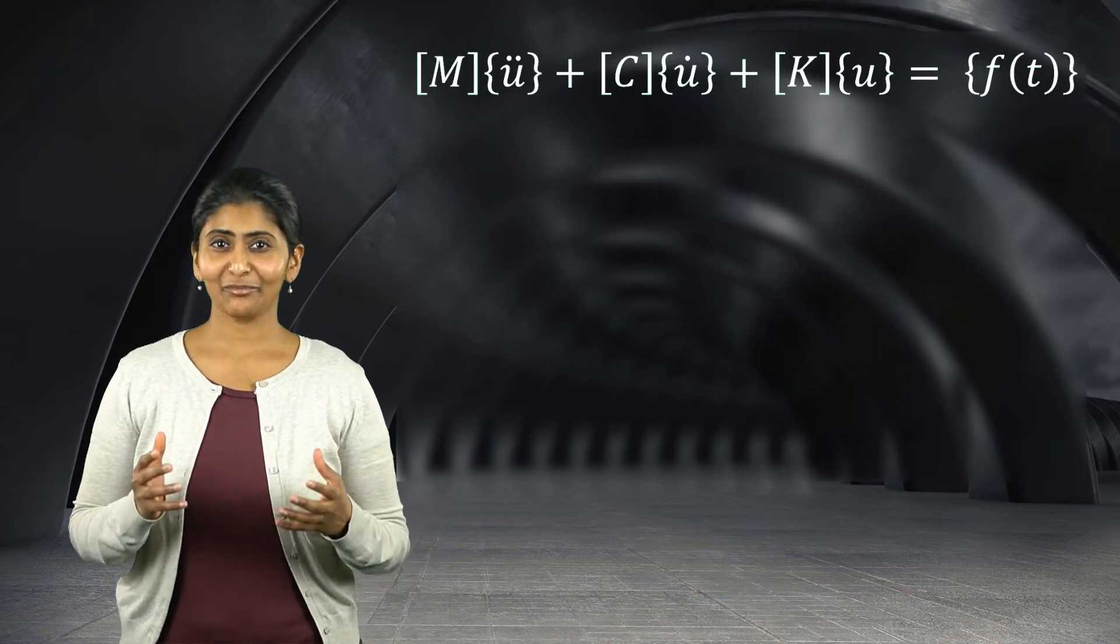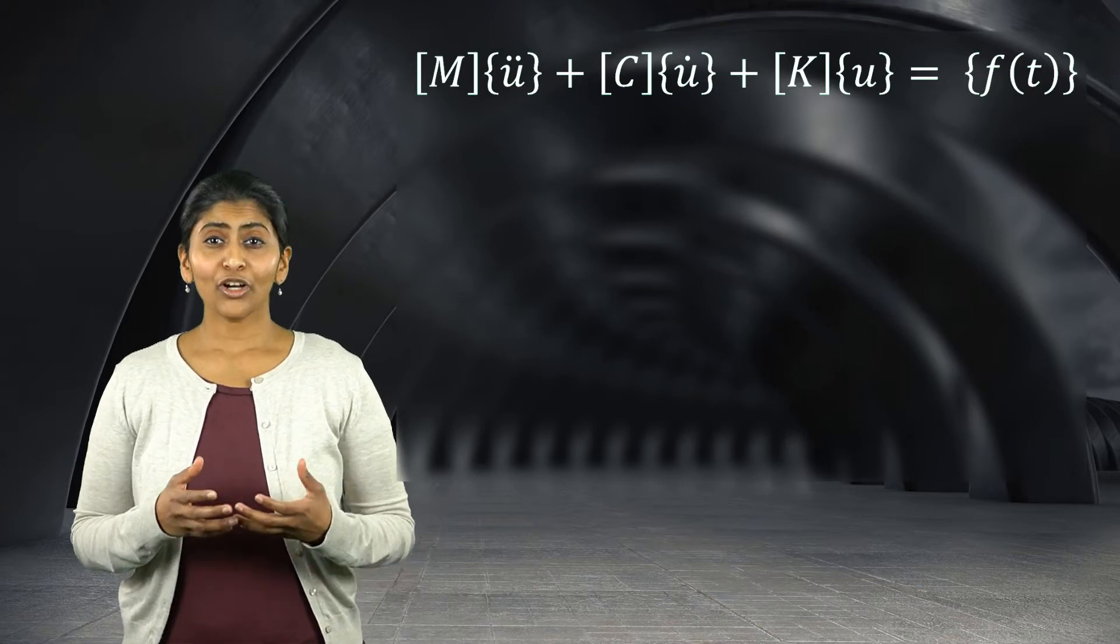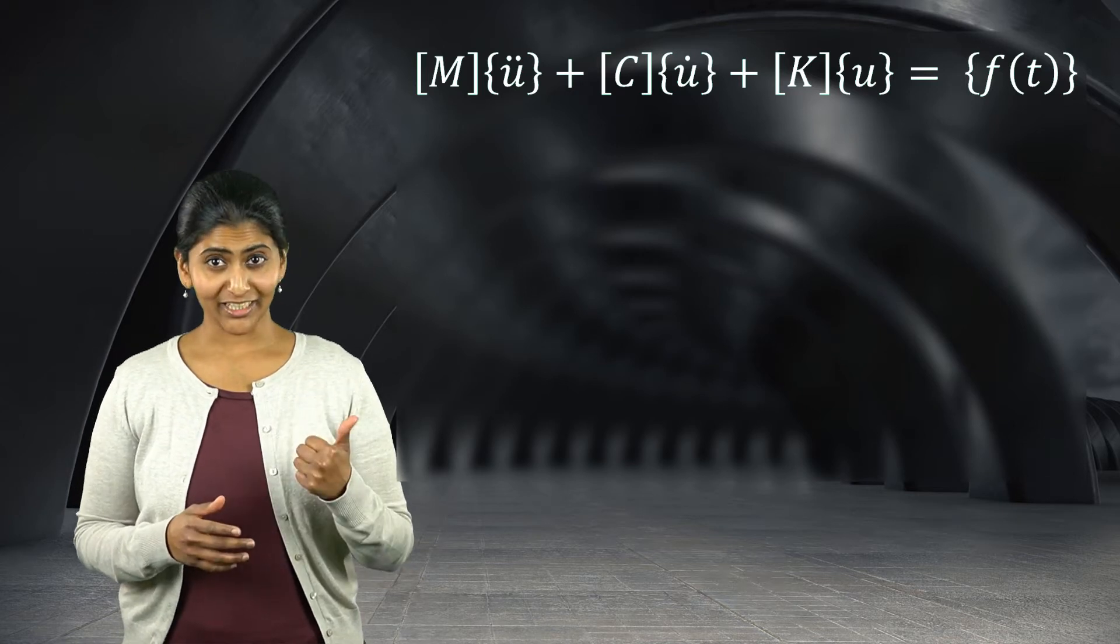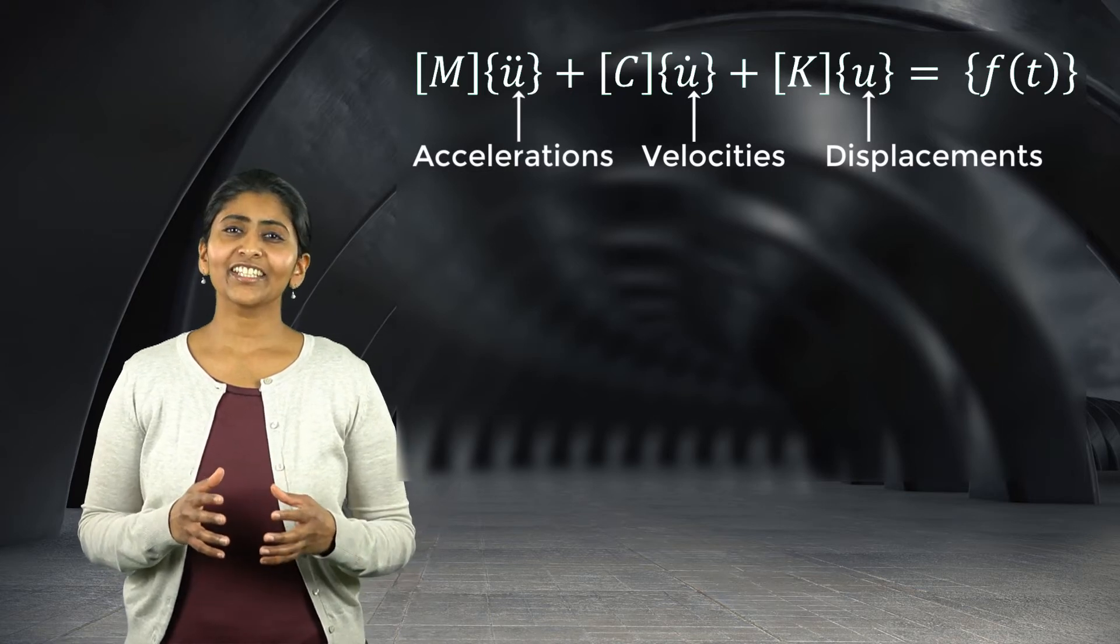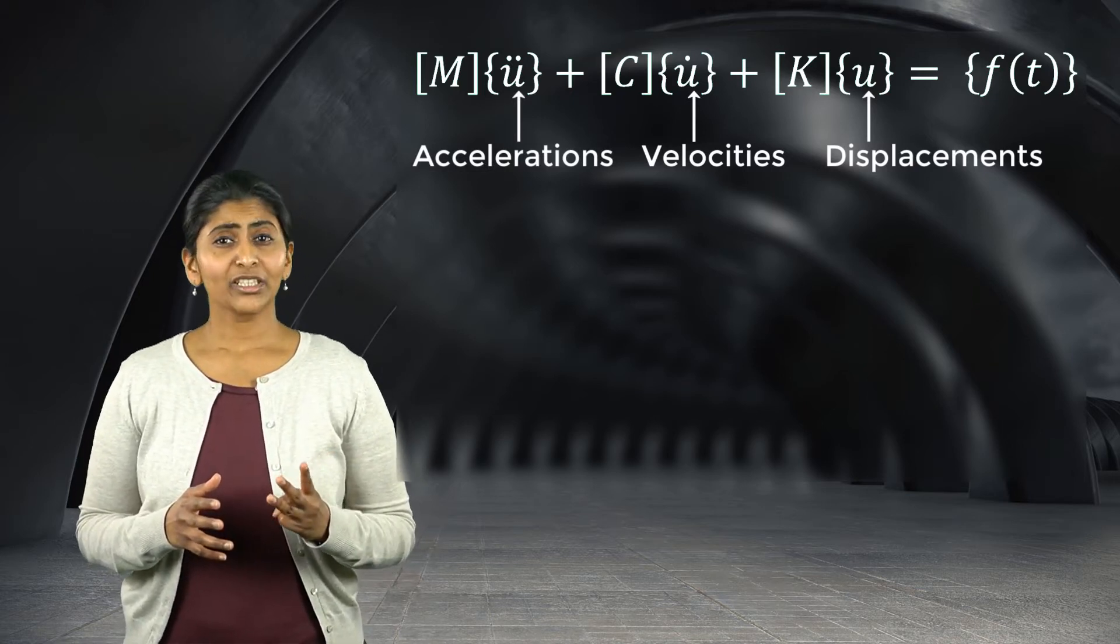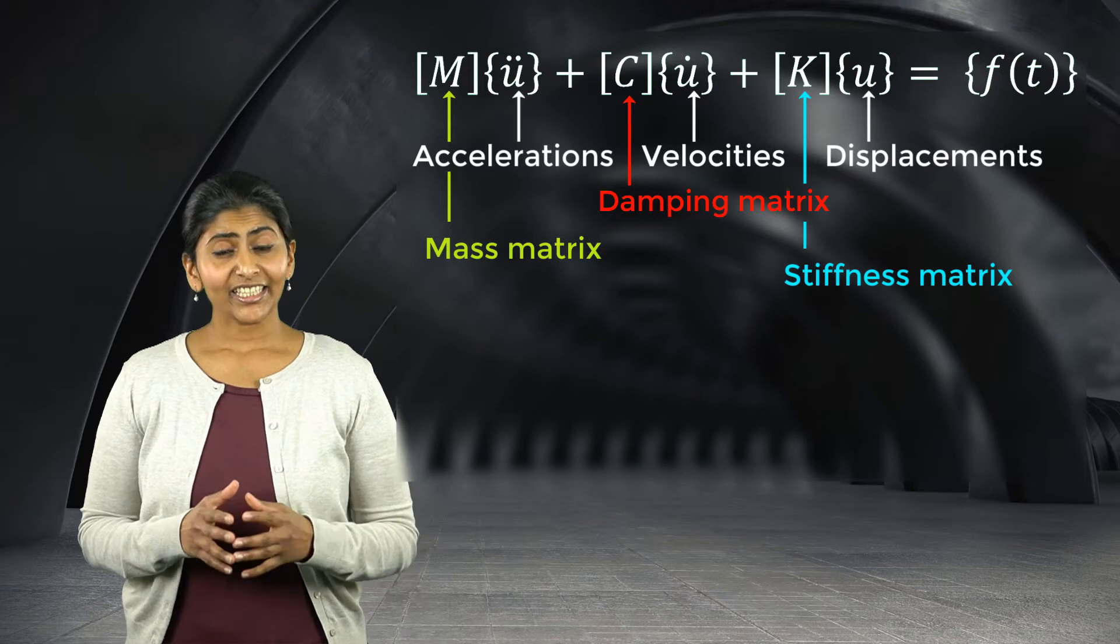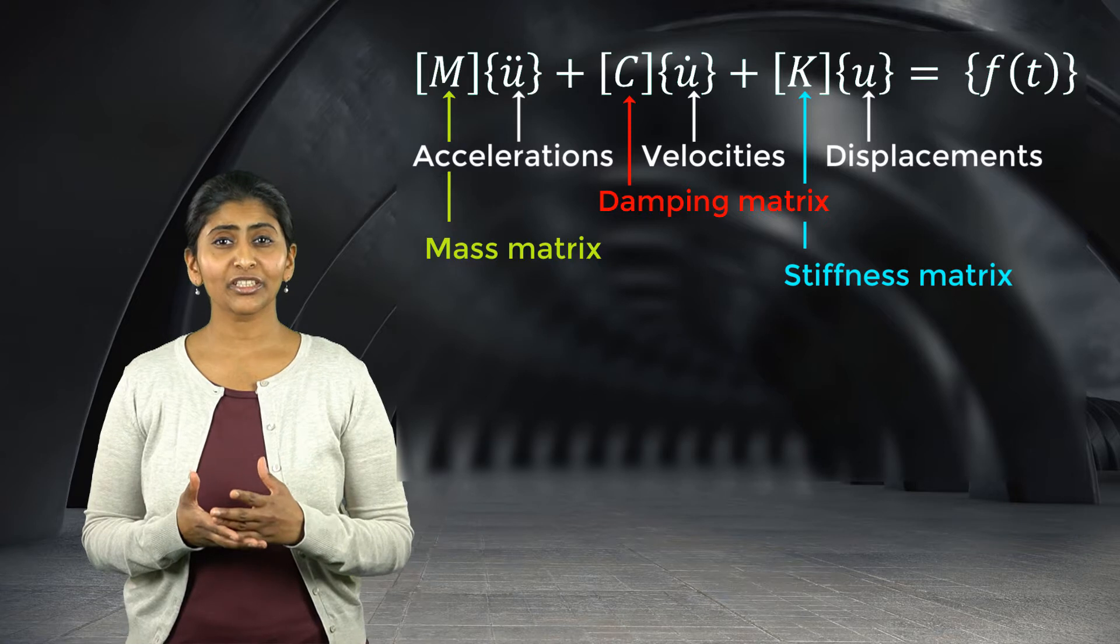This can be realized by studying the governing equations of motion for such systems. Here are the equations of motion for any general dynamic system that is under influence of an external load. Its overall response is captured by three solution terms, namely displacements, velocities, and accelerations. These responses are affected by three properties of the system, which are the mass matrix, the damping matrix, and the stiffness matrix. Each of these matrices show how the respective properties are distributed throughout the system.